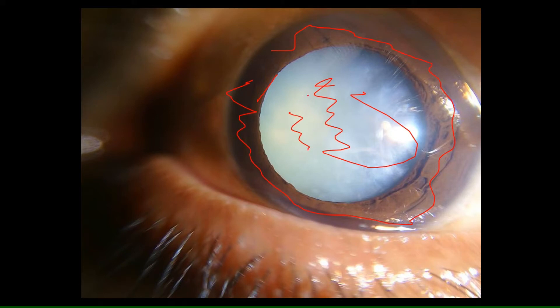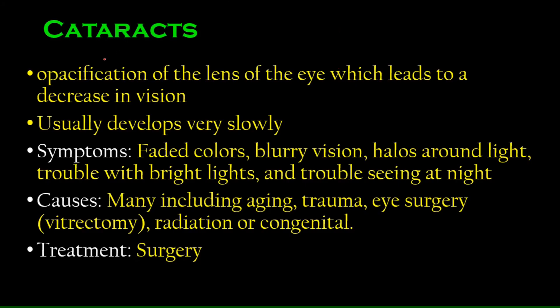It needs to be absolutely transparent and when it's transparent, it appears black. Over here we can see that it's totally white. This is actually cataracts. Opacification, when something becomes opaque instead of transparent.